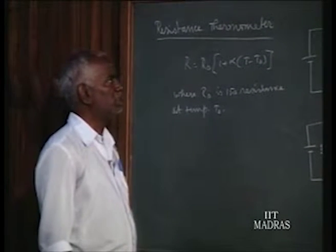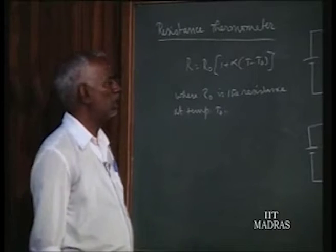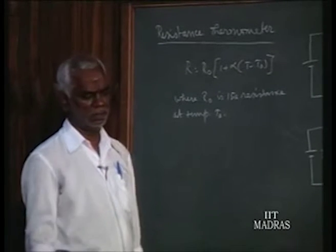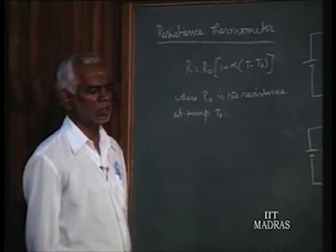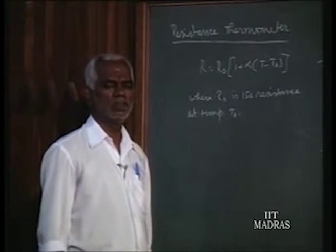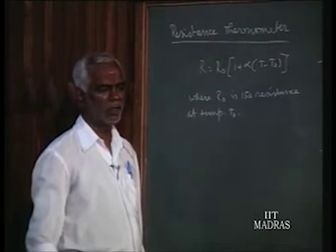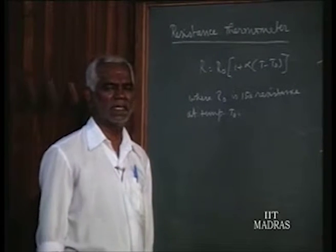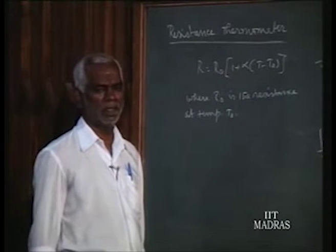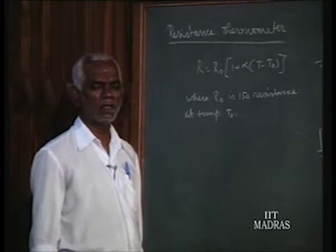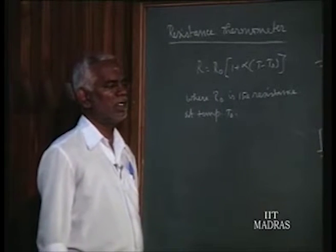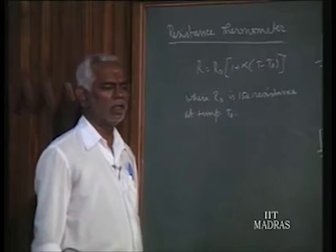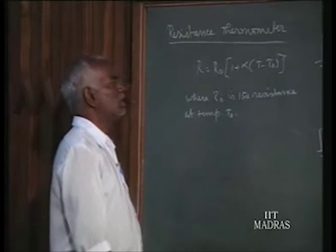We know all metals follow a rule. Similar to our temperature coefficient of linear expansion, we also have for metals a temperature coefficient of resistance. The resistance increases as temperature increases for any metallic material. That is the property that is made use of. When temperature changes, the resistance changes and that is made use of to measure the particular temperature.